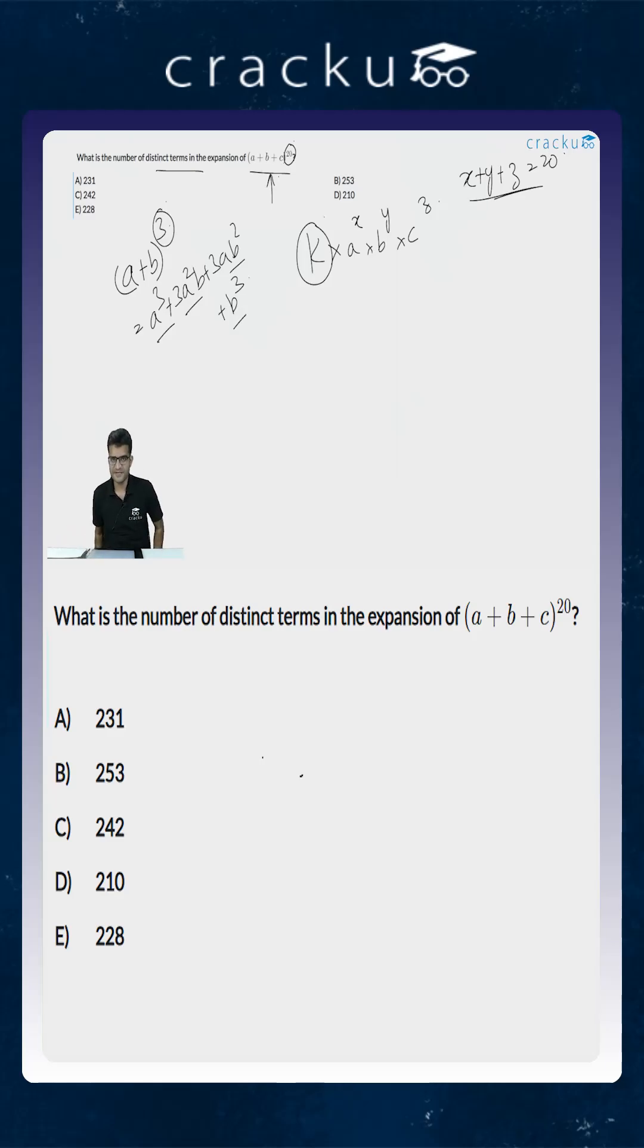So here we have x + y + z = 20. Now how many solutions does x + y + z = 20 have? There is a formula which will help us in determining the number of non-negative integral solutions.